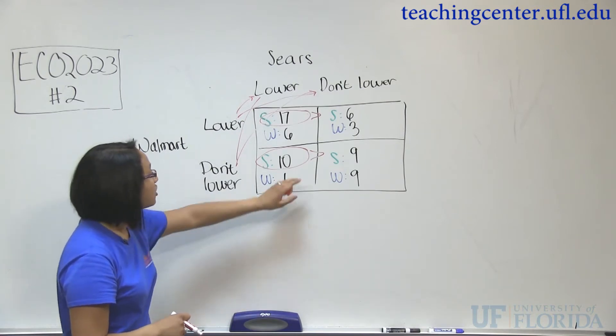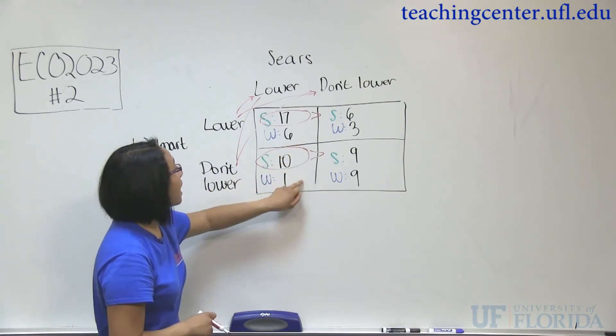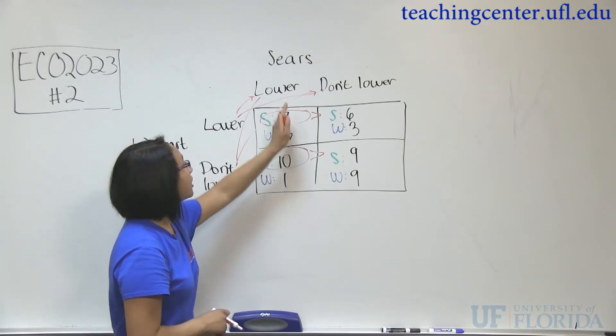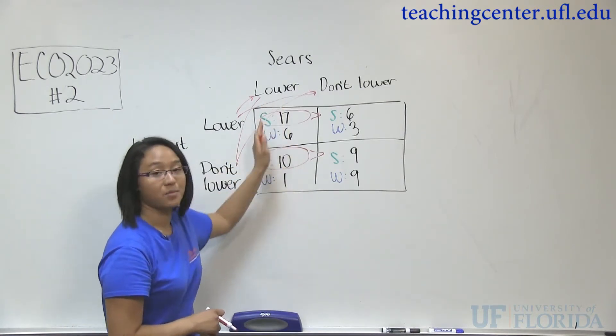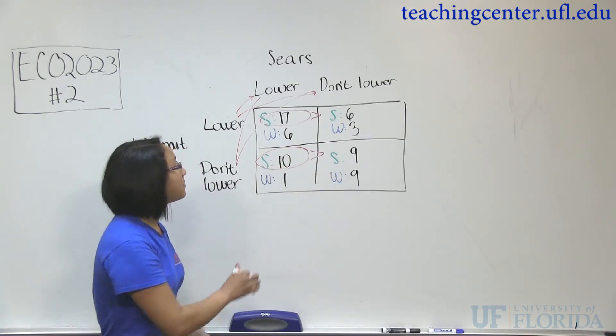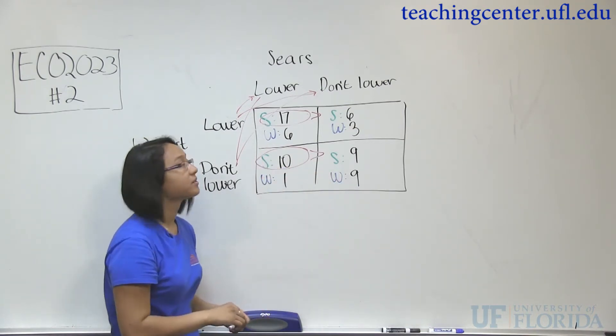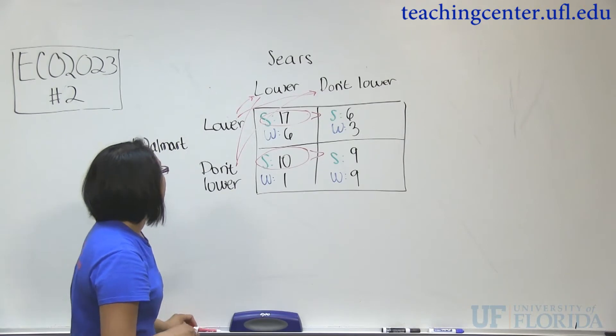A dominant strategy is when both of your profits are greater for an entire option than the other — and that's comparing the columns for Sears.